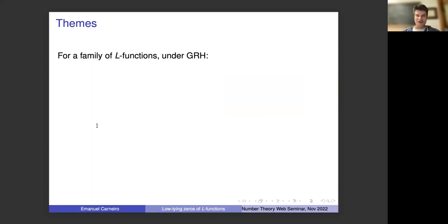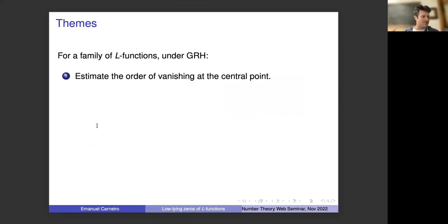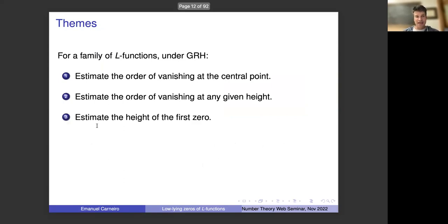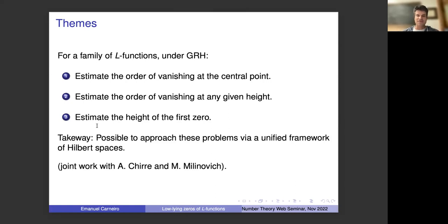So this is essentially the theme I want to talk about this afternoon. For families of L-functions, assuming the generalized Riemann hypothesis, we want to estimate the order of vanishing at the central point. This is a well-known, well-studied problem. I want to estimate the order of vanishing at a given height — a low-lying height — and also to consider the problem of estimating the height of the first zero in a family of L-functions. My main idea is to provide a unified framework via Hilbert spaces to tackle these problems.